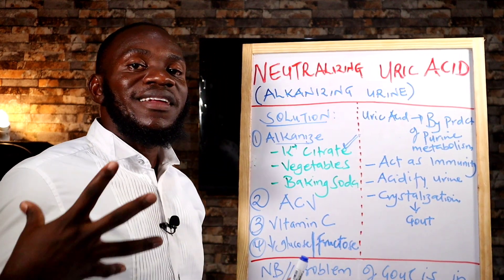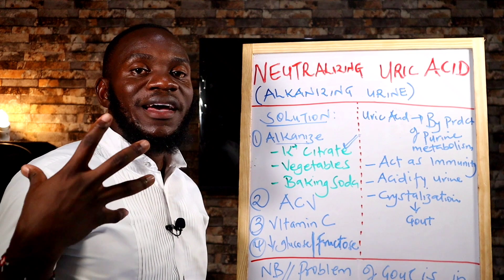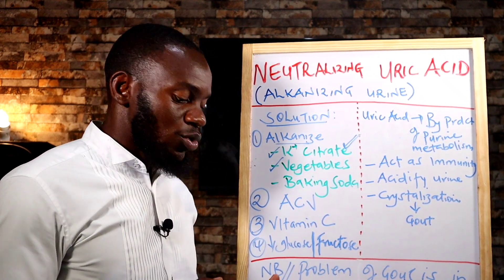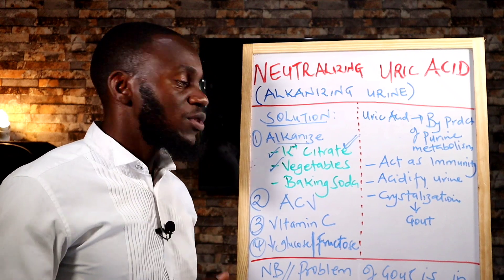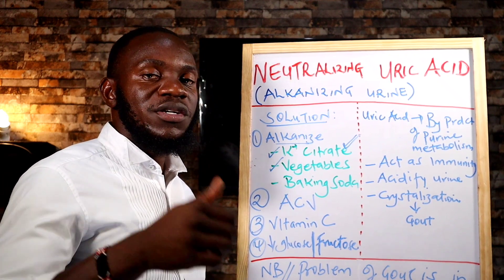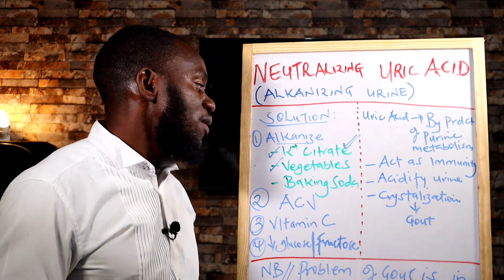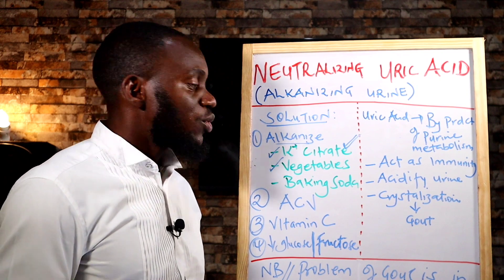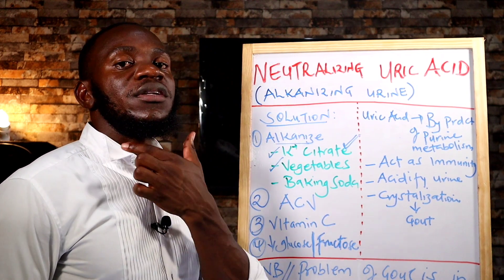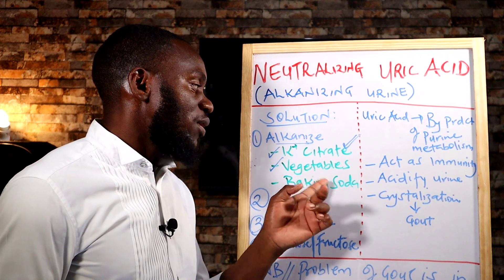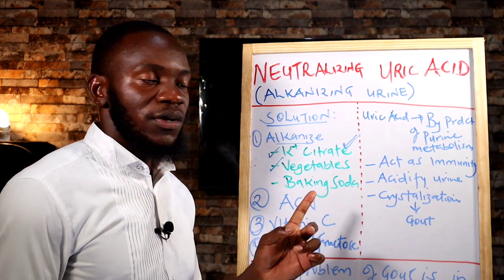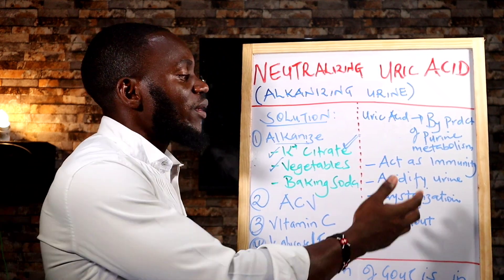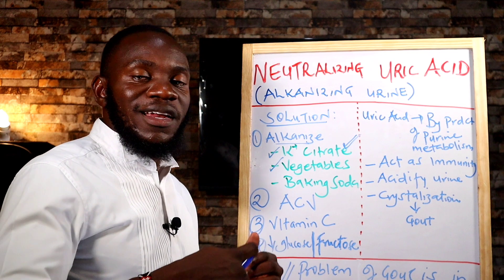Number one is potassium citrate — these are supplements that are available; once you take them they make your urine basic and help you recover from gout. Number two is vegetables, specifically cruciferous vegetables, which we also discuss in the management of estrogen, thyroid problems, and diet. Consuming vegetables in higher amounts is important because they contain enzymes that break down uric acid and also alkalize urine.